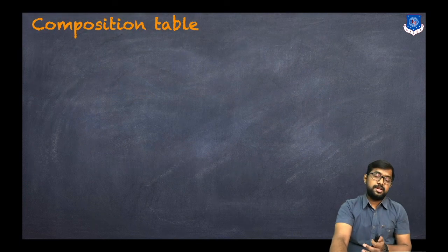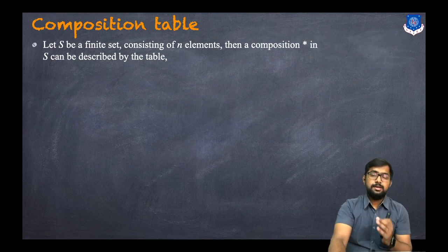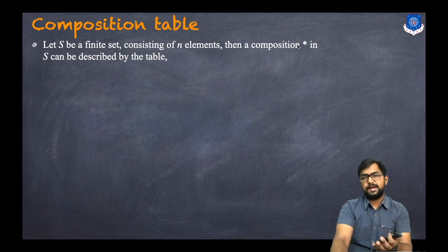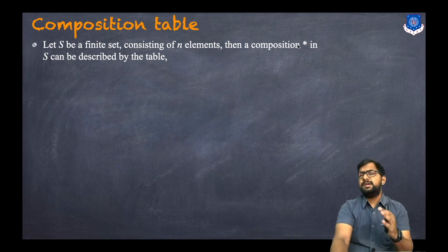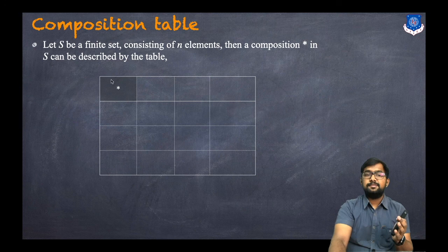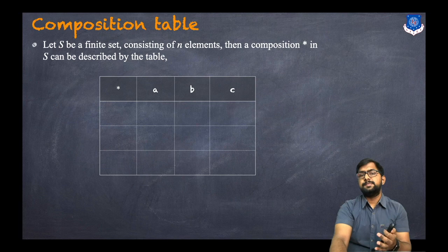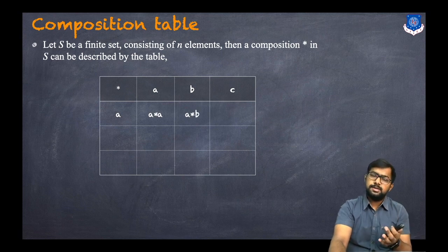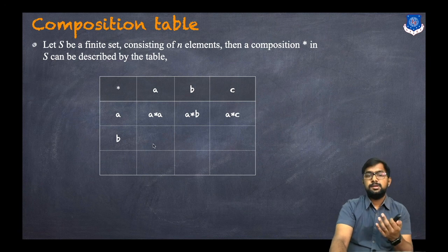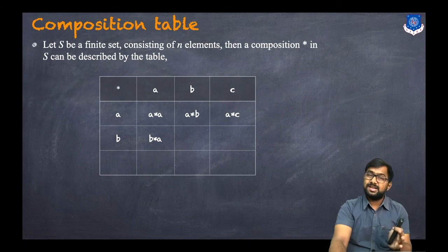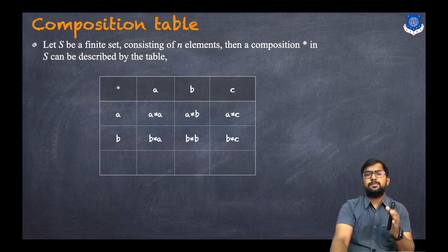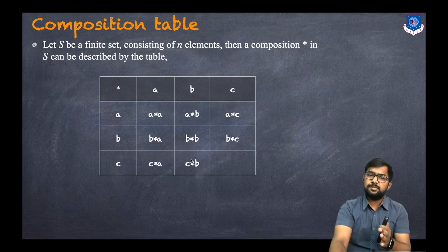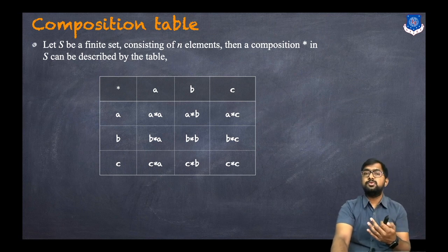Now, what is a composition table? Let capital S be a finite set consisting of n elements. A composition under star in S can be described by a table. For example, with elements a, b, and c, the table rows and columns are labeled a, b, c. The entries are: a star a, a star b, a star c; then b star a, b star b, b star c; then c star a, c star b, and c star c. This is how we construct a composition table.